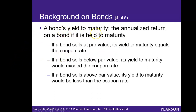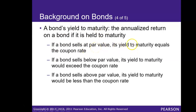Bond yield to maturity refers to the annualized return on a bond if it is held to its maturity date. When you use the term yield, you are referring to the rate of return on your investment. If a bond sells at par value — also known as face value — its yield to maturity equals the coupon rate, which is the stated rate of interest on the bond. For example, a 5% coupon rate means the yield would also be 5% when selling at par.